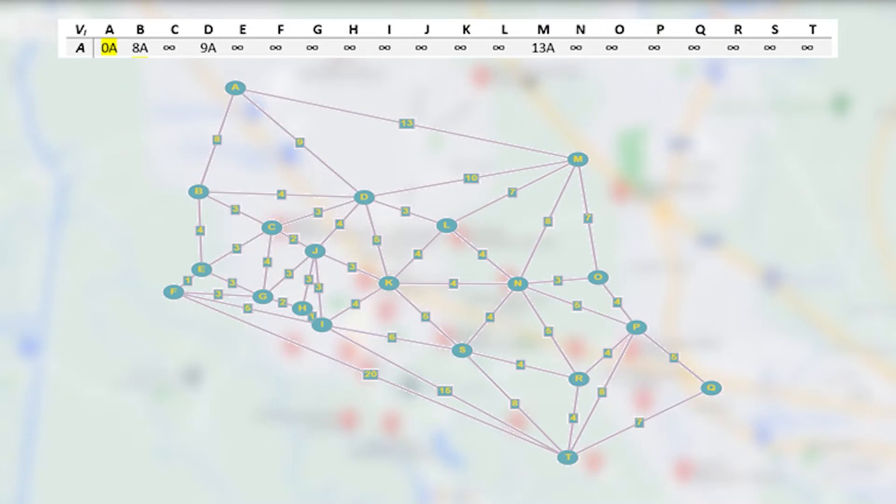Then, we will find all adjacent vertices of A, which are B, D, and M. We will add the permanent label of A, which is 0, to the weight of each adjacent vertices. B will be 0 plus 8 equals 8, D will be 0 plus 9 equals 9, and M will be 0 plus 13 equals 13. These new values will be temporary values. Other vertices that are not included in the computation will be labeled as infinity.